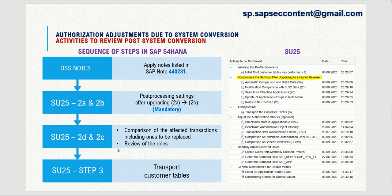As part of the preparation to upgrade roles, you have to review and apply all applicable notes listed in OSS note 440231 before you do anything in SU25. After that, you can proceed with the steps under the post-process settings after upgrade to higher release section in SU25.